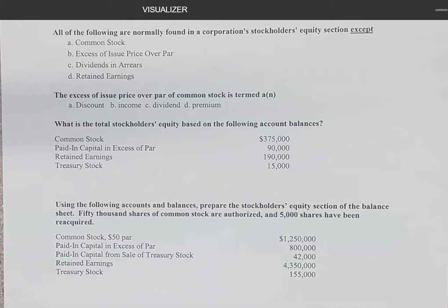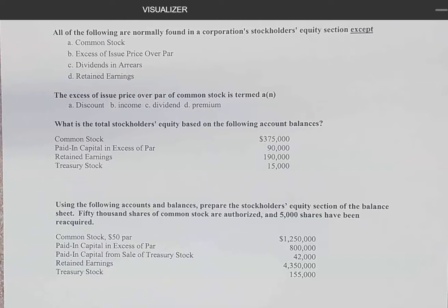We've talked about stock having either a par value or no par value, and generally stock does have a par value. What we also need to talk about is the fact that stock is not necessarily going to be sold by the issuing corporation for the par value. If we have stock with a $1 par, that's not what we're selling it for as a rule — generally we're selling it for more than par. The par never changes unless we do a stock split. If a company is unsuccessful, the market price could be below par value, but that's a fairly rare situation.